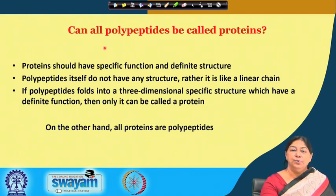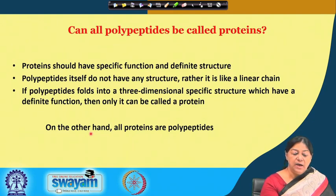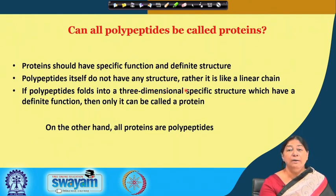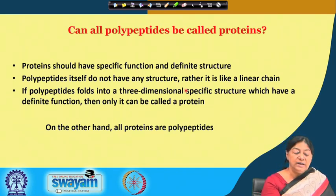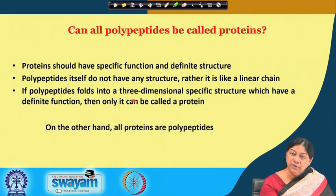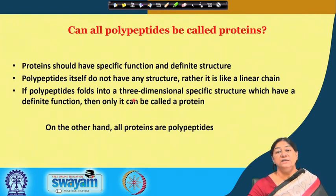Can all polypeptides be called proteins? The answer is no. Proteins have a specific function and a definite structure. All proteins are polypeptides, but polypeptides themselves do not necessarily have a structure and hence do not have a function. There is research on intrinsically disordered proteins, but in general the polypeptides we are concerned with fold into a specific unique three-dimensional structure with a definite function, which we call a protein.